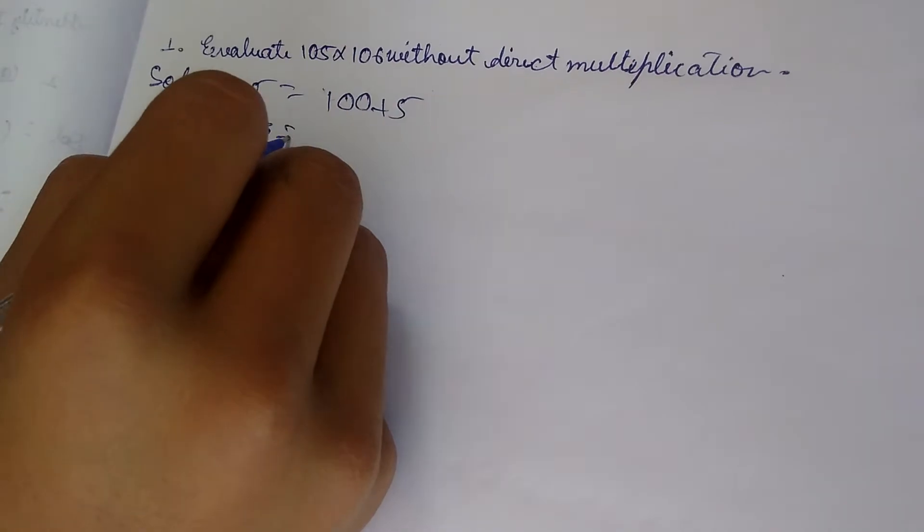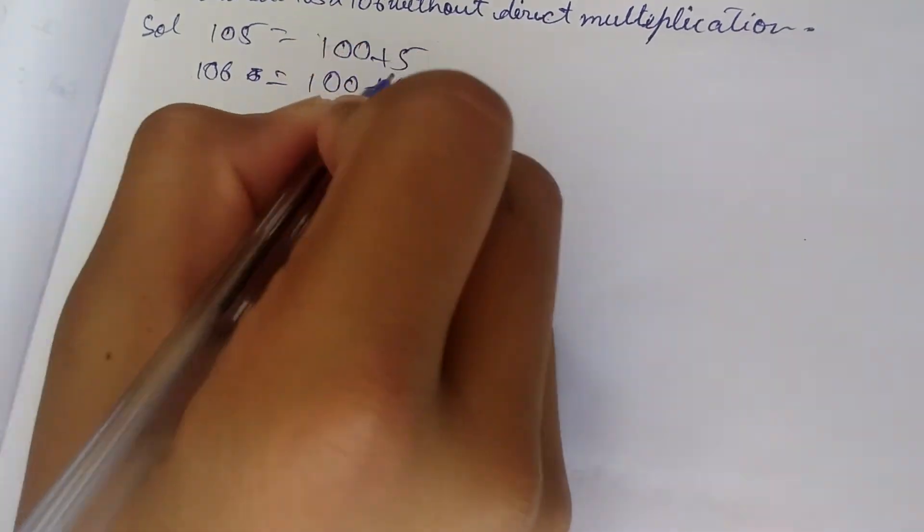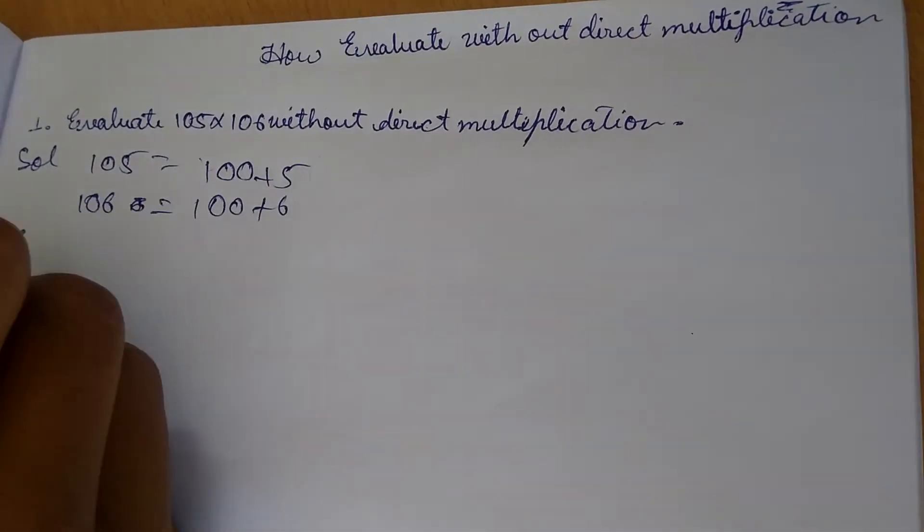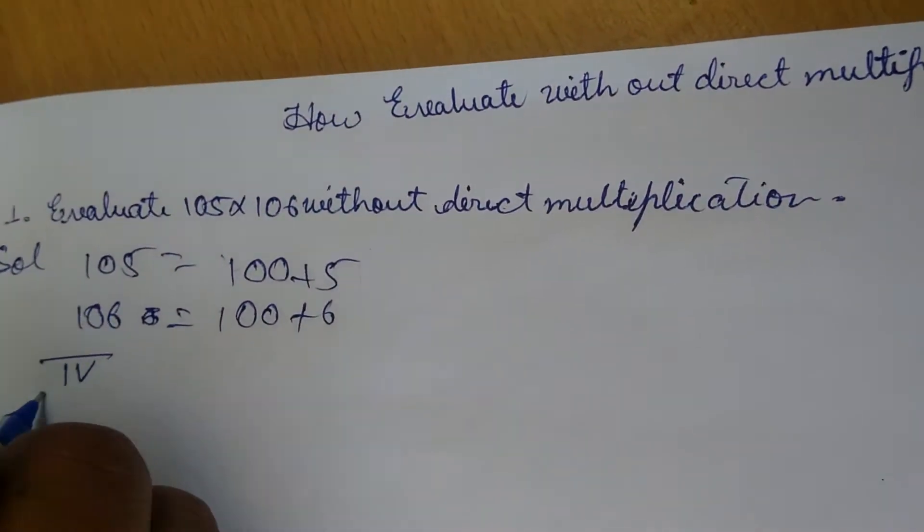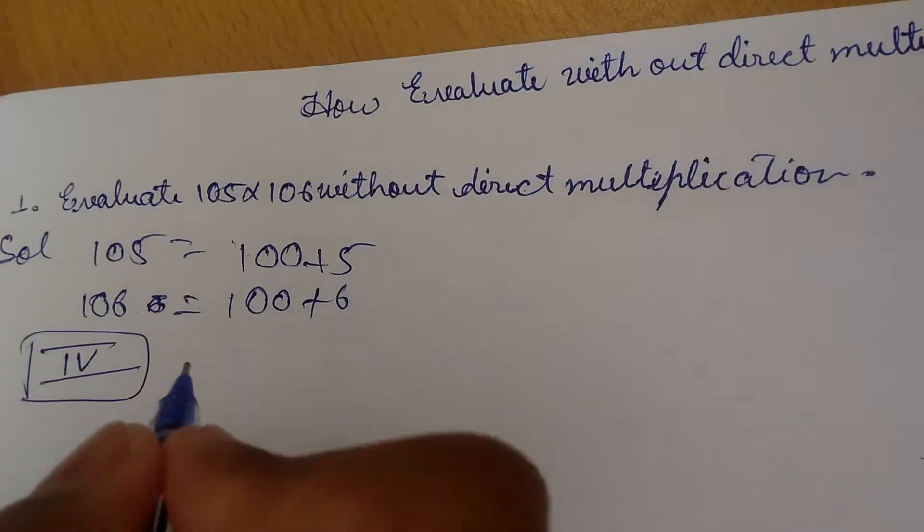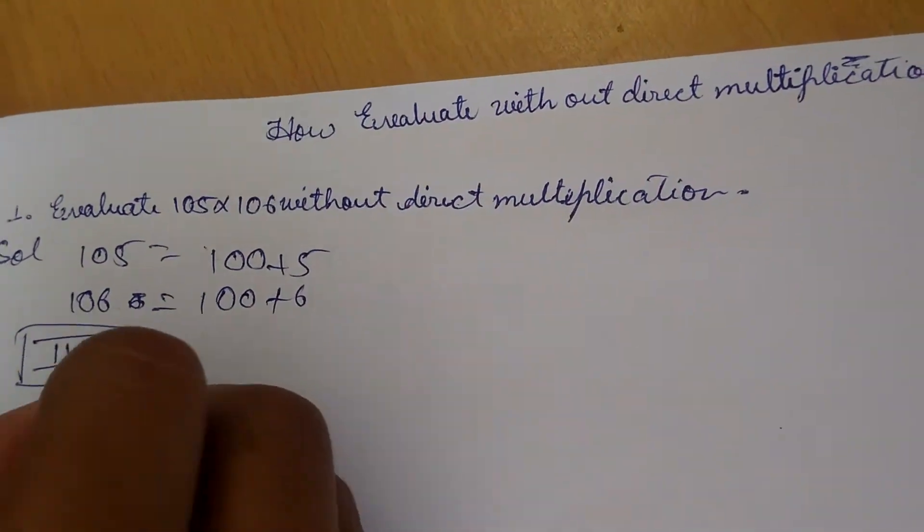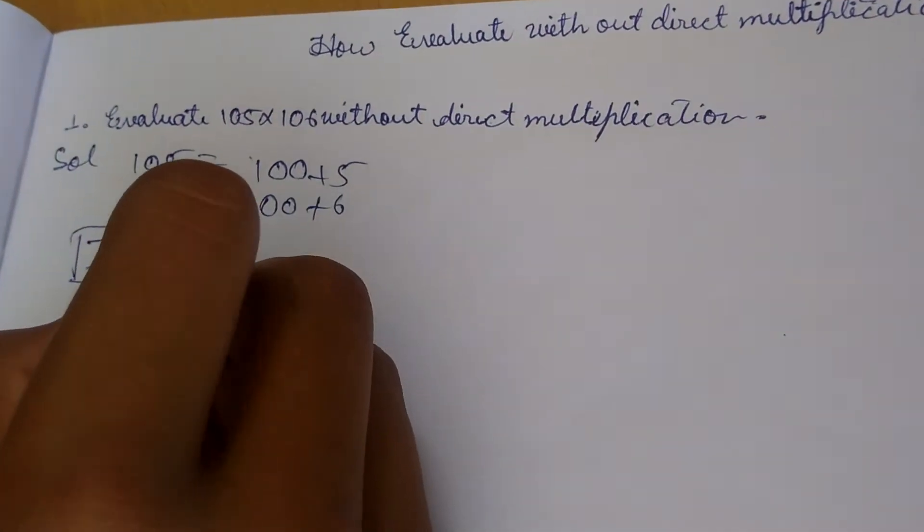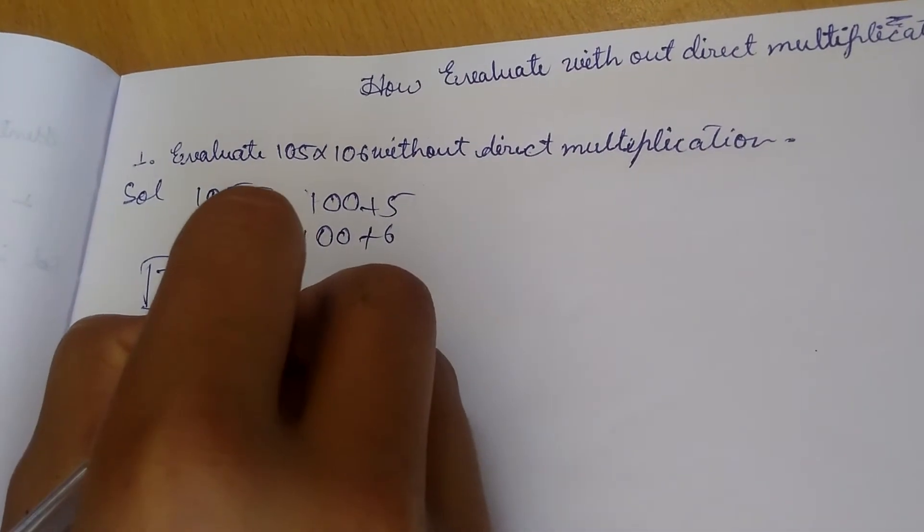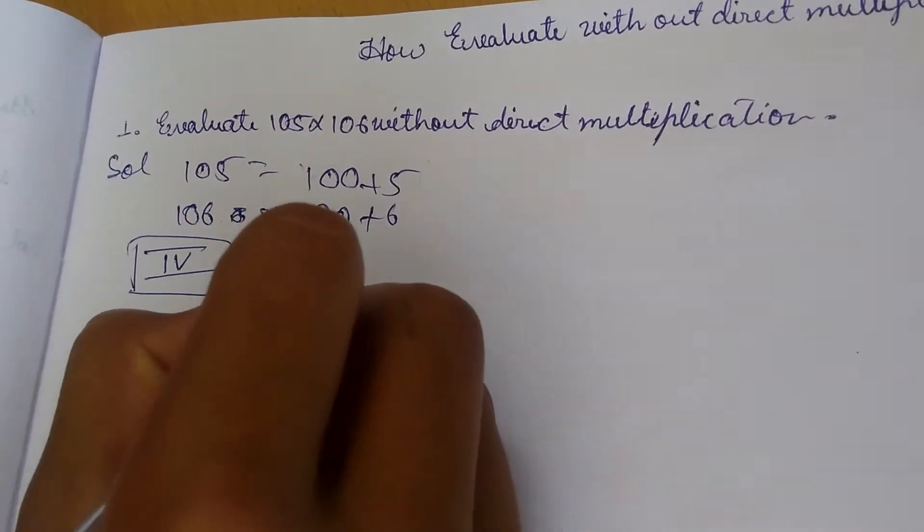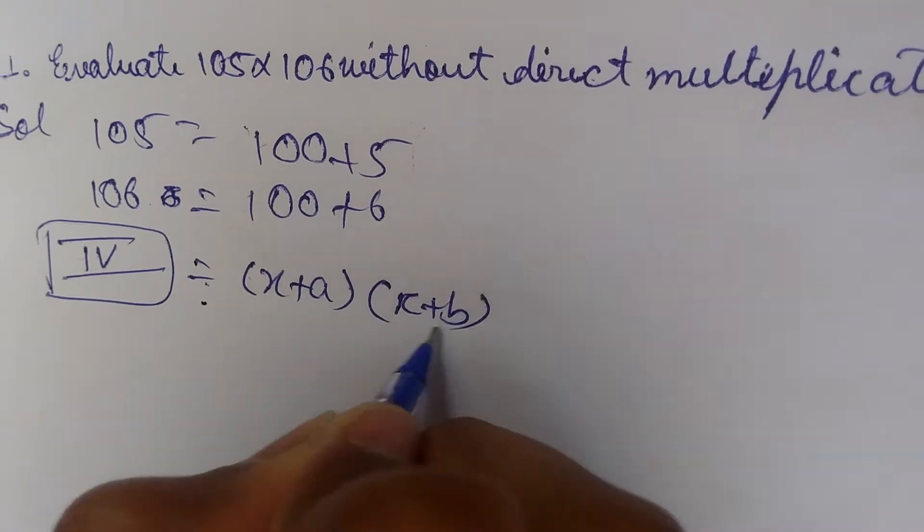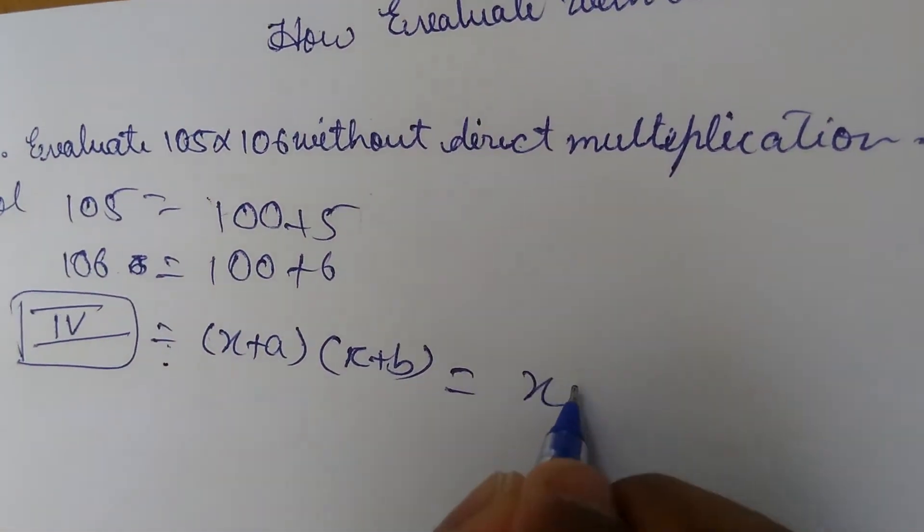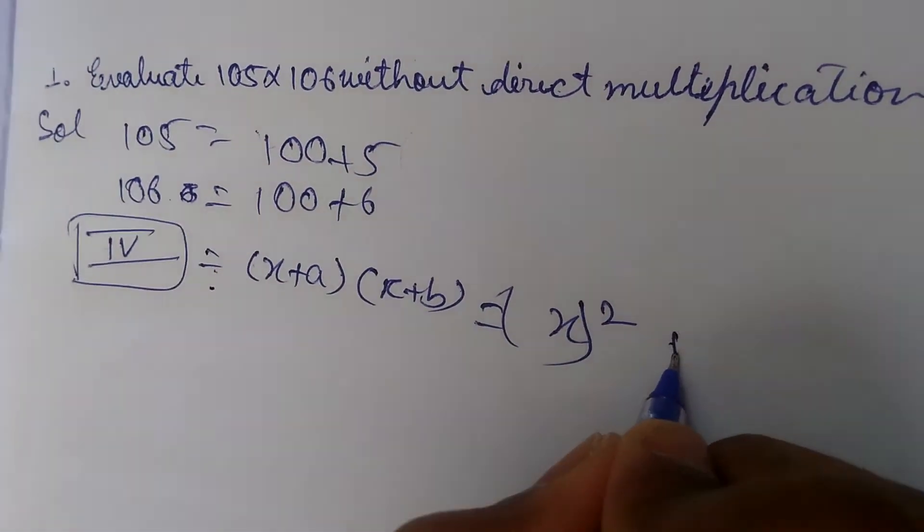Now I will use identity number four of algebra, which is: (x + a)(x + b) equals x whole square plus x(a + b) plus ab.